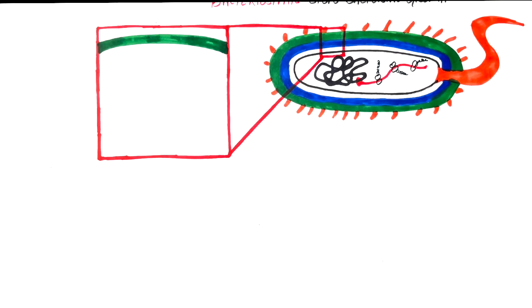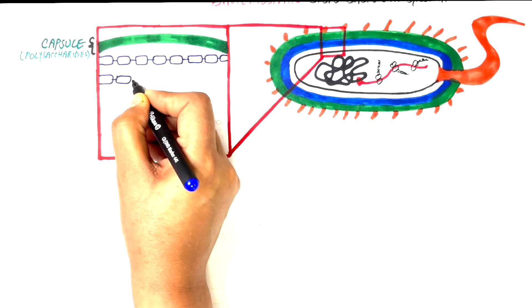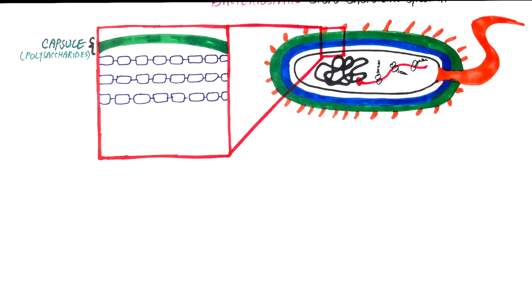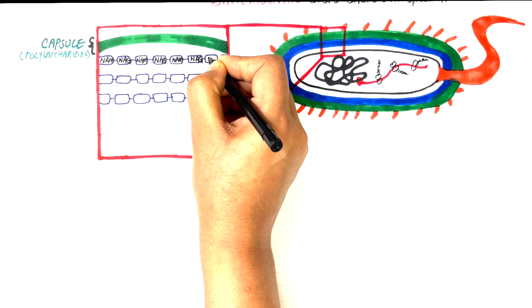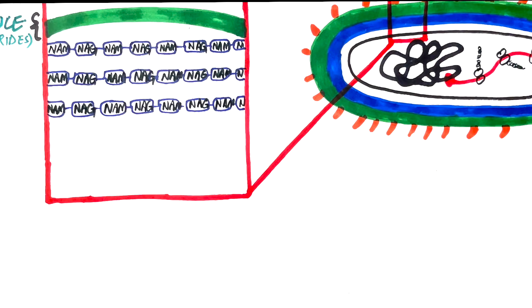A simple bacterial cell has got an outer sticky capsule which is made up of polysaccharides. The polysaccharide capsule helps in adherence of a bacterial cell to other cells. Underlying the capsule is the next layer — the cell wall — which is made up of a peptidoglycan chain, where glycan means sugars and peptide means protein. The peptidoglycan chain on a close-up view is made up of alternating subunits of N-acetylmuramic acid (NAM) and N-acetylglucosamine (NAG), both of which are derivatives of sugars.